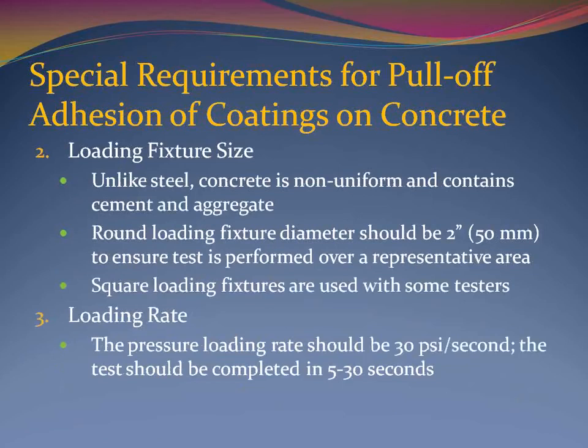The second consideration is loading fixture size. Unlike steel, concrete is a heterogeneous or non-uniform substrate that contains cement, paste, and aggregate. While any diameter loading fixture can be used, a 2-inch or 50-millimeter diameter fixture is recommended so that the adhesion strength of the coating is evaluated over a representative surface. Square loading fixtures are used with some test devices. The third requirement is regarding loading rate — the loading rate applied to the fixture by the adhesion tester should be approximately 30 psi per second so that the test pull is complete in 5 to 30 seconds.